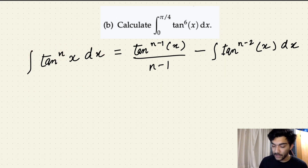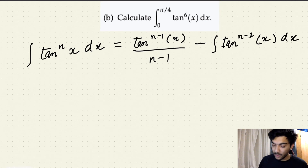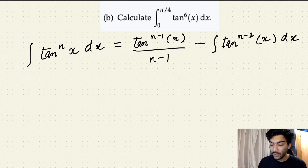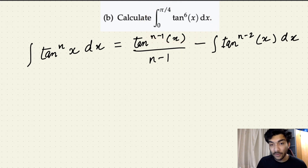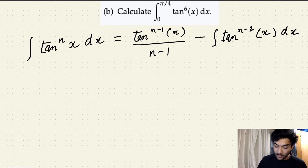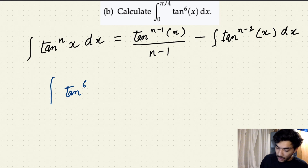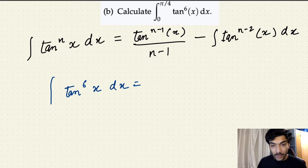This time your power will be changed to n minus 2. So let's see how we can calculate the definite integral of tan to the power 6 of x dx. In order to simplify this question, let's first calculate the indefinite integral of tan to the power 6 of x, and then we'll plug in the endpoints in order to get the final answer. So if we solve for the indefinite integral of tan to the power 6 of x dx, let's use the reduction formula.